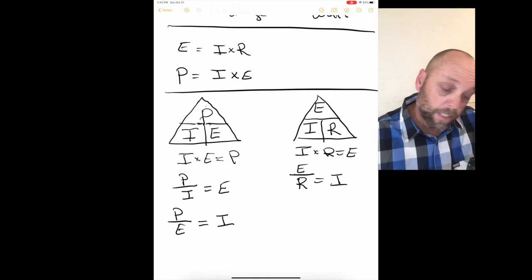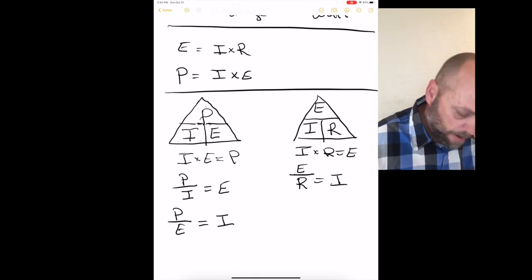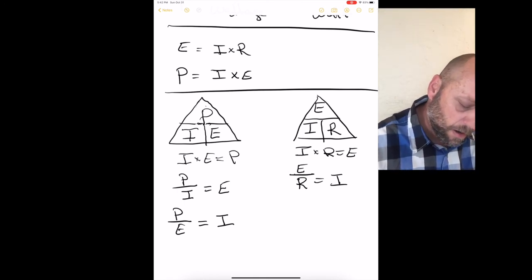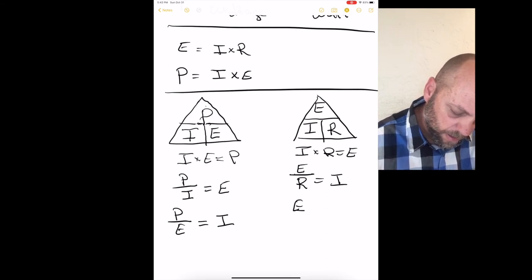And if you're looking for resistance or ohms, go ahead and cover up the R in the triangle, that would be E divided by I equals R.